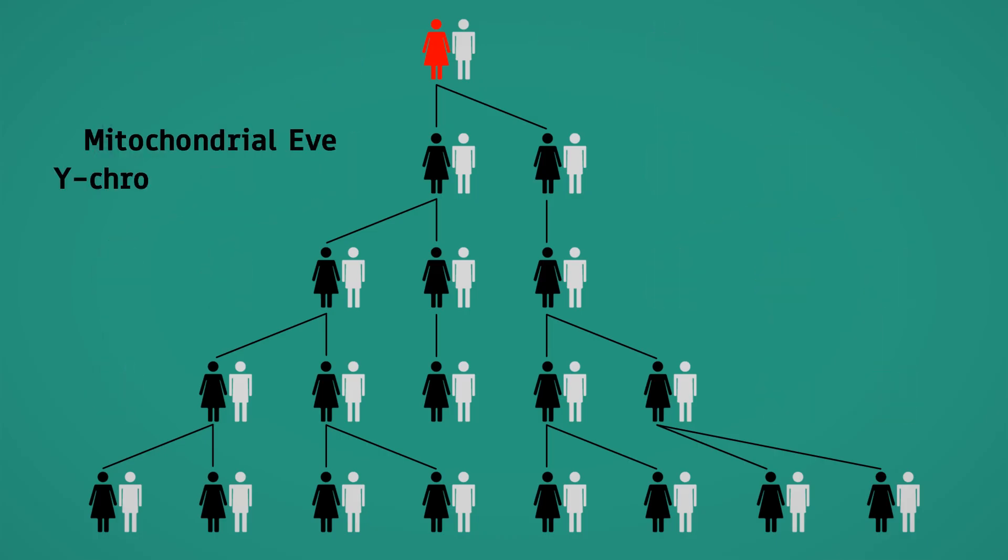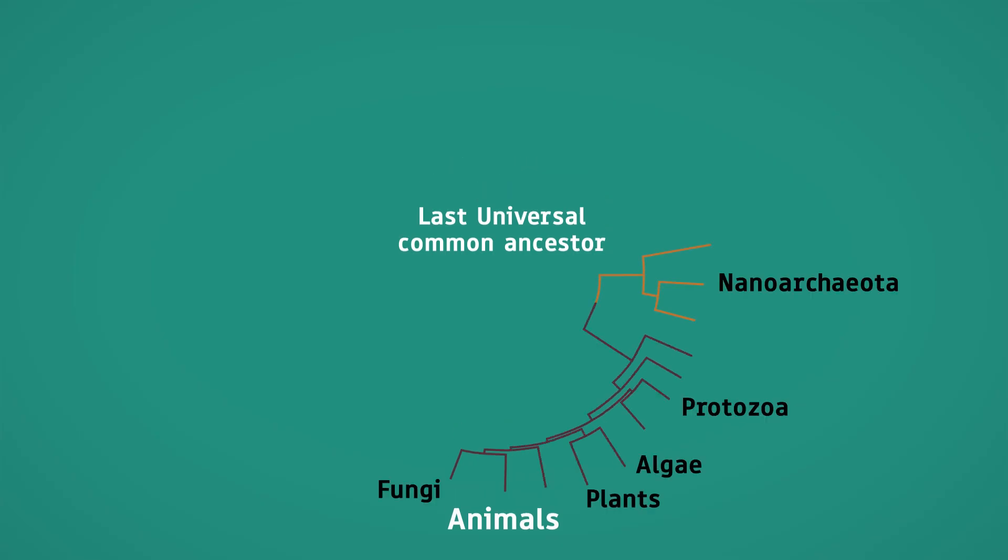Also, mitochondrial Eve and Y-chromosomal Adam were only the most recent common ancestors. Going back in time, we can even find common ancestors of species all the way back to the first single-celled organisms.